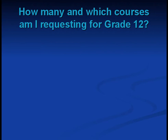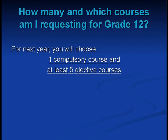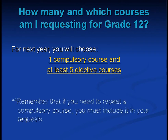How many and which courses am I requesting for grade 12? For next year, you will choose 1 compulsory course and at least 5 elective courses. Remember that if you need to repeat a compulsory course, you must include it in your requests.